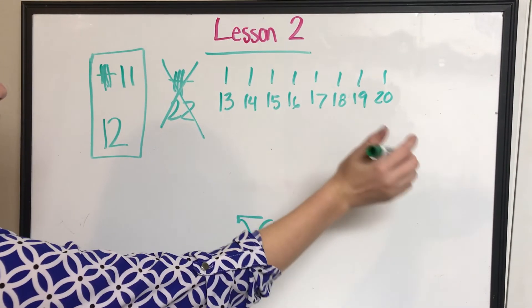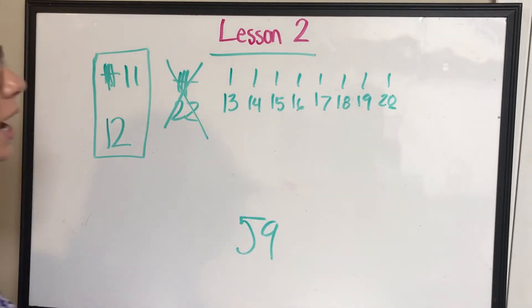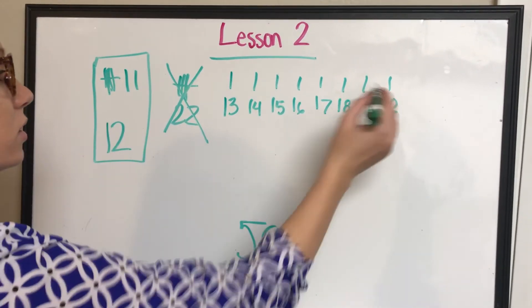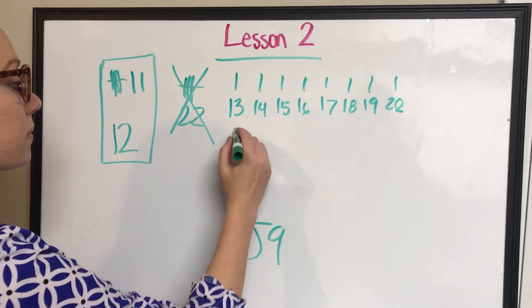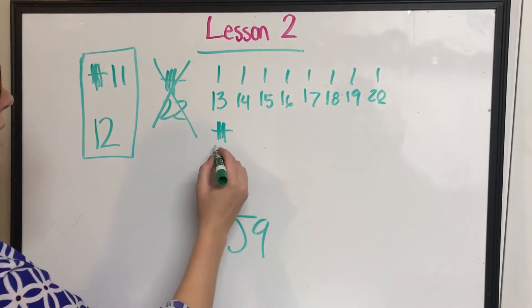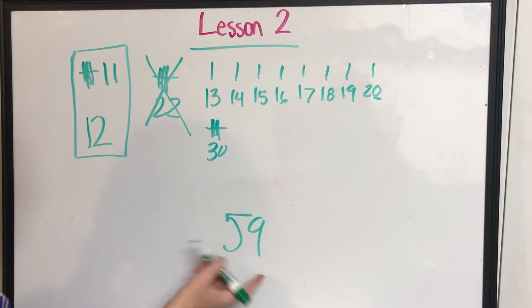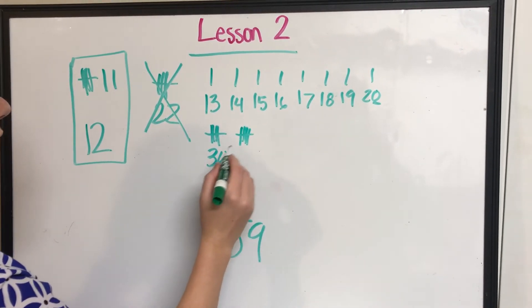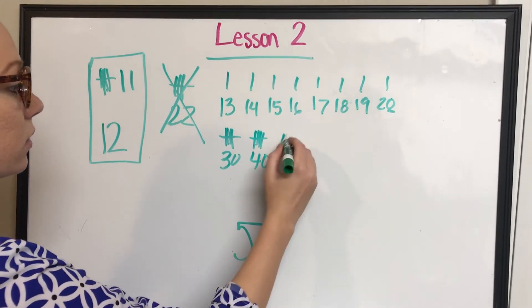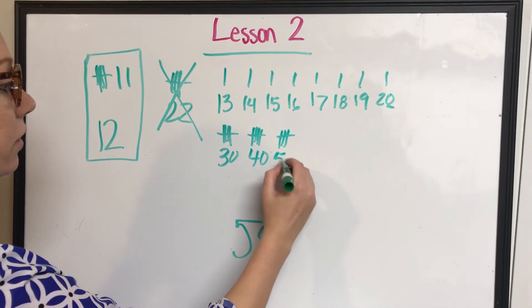Now that I'm at 20, when my ones has a 0, I can now add tens blocks to it. So I'm going to go ahead and add a tens. 20 plus 10 is 30. Remember, I'm trying to get to 59. Add another tens block. 30 plus 10 is 40. 40 plus 10 is 50.